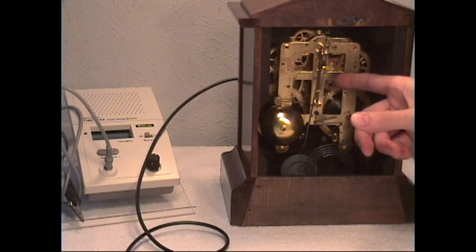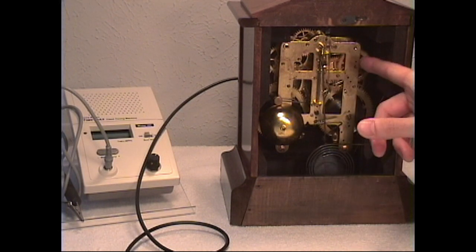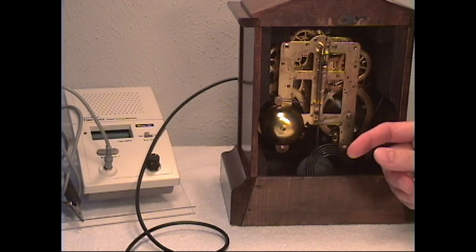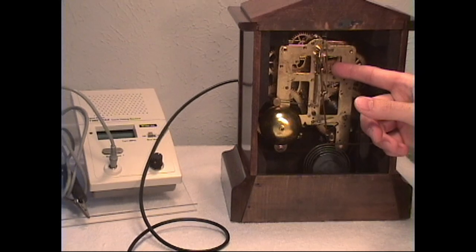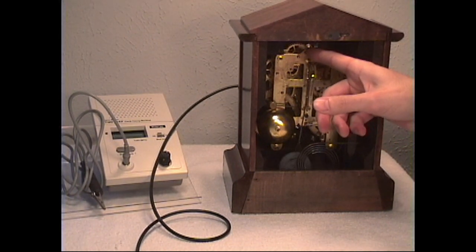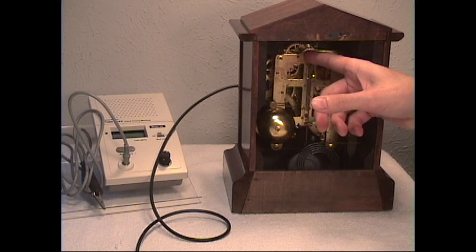Now by turning the crutch either inward or outward, bending it, will change the beat because what it does is it affects the way the escapement is contacting the escape teeth on the escape wheel.